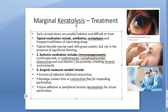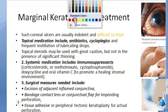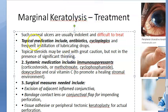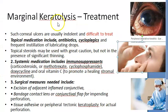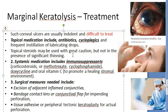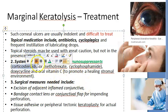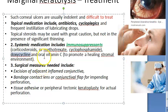Regarding treatment, these cases are difficult to treat — they are indolent, meaning slow and stubborn. Topical medications include antibiotics, cycloplegics, and lubricating drops. Steroids are used with great caution and are not given in the presence of significant thinning. Systemically, immunosuppressants are used: corticosteroids, methotrexate, and cyclophosphamide, since conditions like SLE and RA are autoimmune in nature.